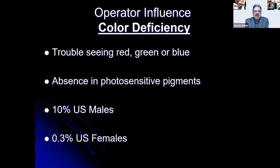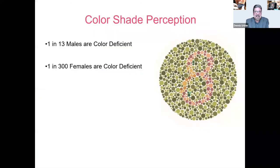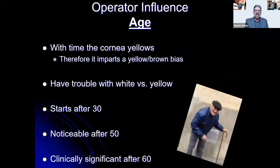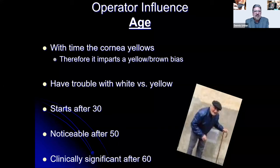Operator influence — color deficiency: some people have trouble seeing red due to absence of photosensitive pigments. One in 13 males are color deficient, one in 300 females. A simple test: if you can see the number 8 in the Ishihara plate you're in good shape. Age also matters: with time the cornea yellows, imparting a yellow-brown bias. This is noticeable after age 50 and clinically significant after 60. Operator fatigue also affects accuracy — color cannot be perceived accurately by tired eyes, leading to inaccurate matches.